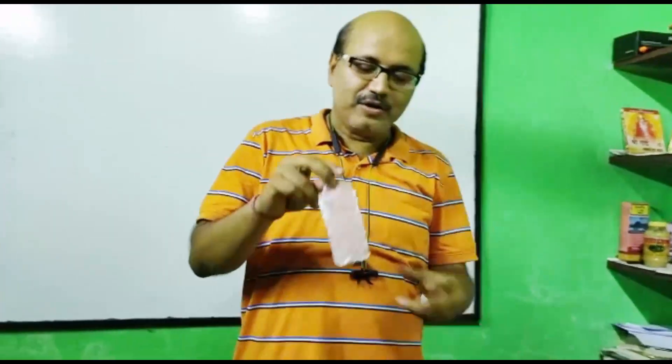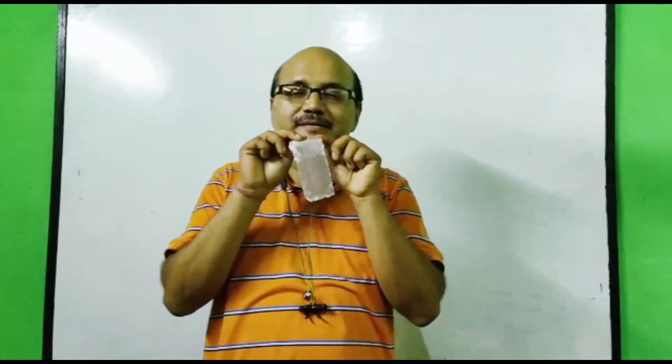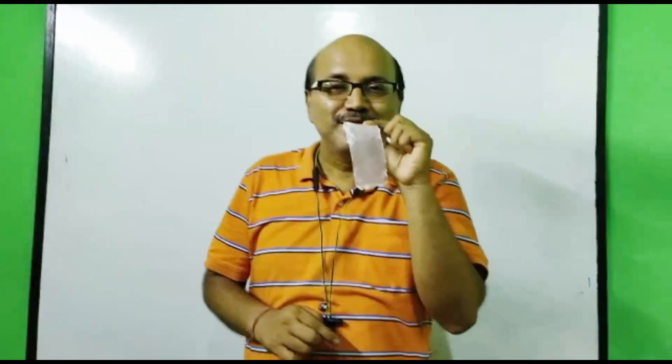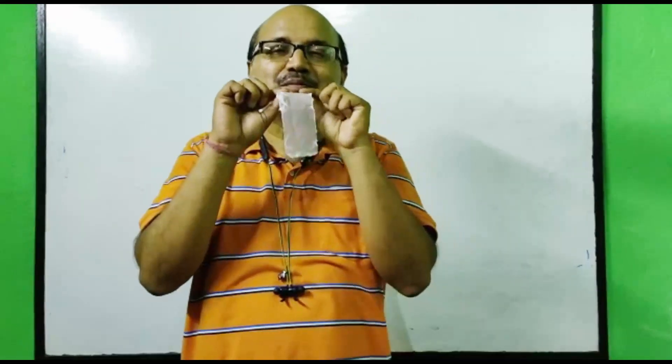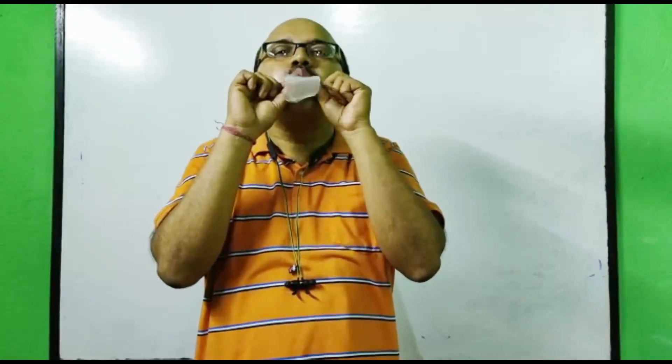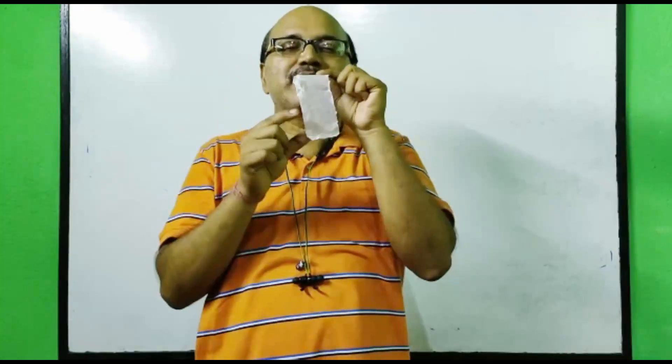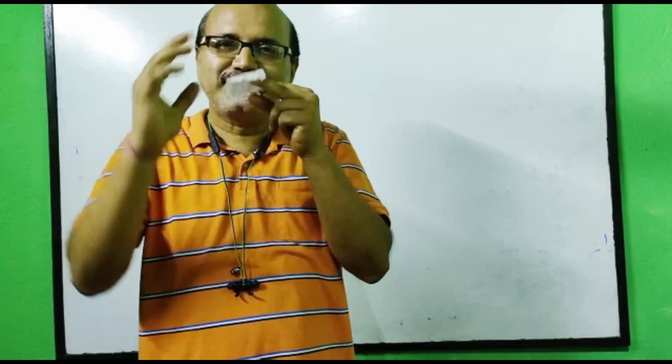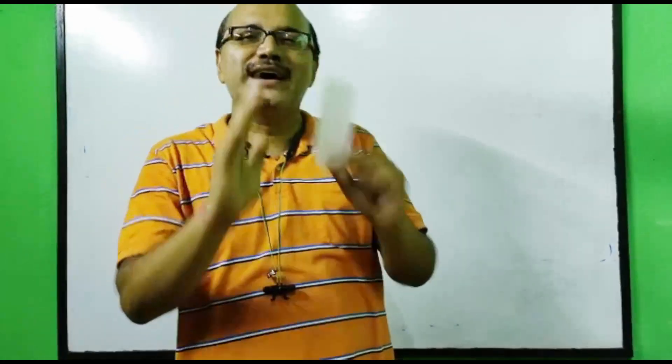The next experiment is with a single paper only. If I blow air straight along the paper, any guesses what will happen? When I'm blowing air straight, the paper also becomes straight — it rises up. The velocity of air is very high above the paper, so pressure decreases. The pressure below is higher, so the paper goes up.